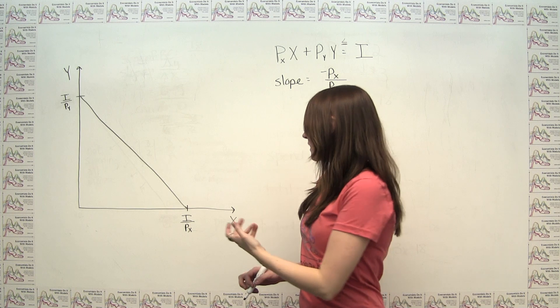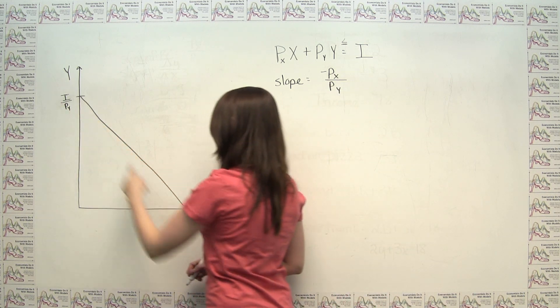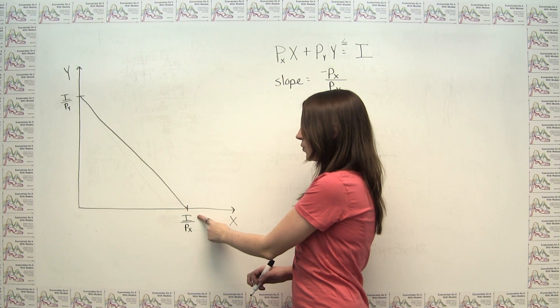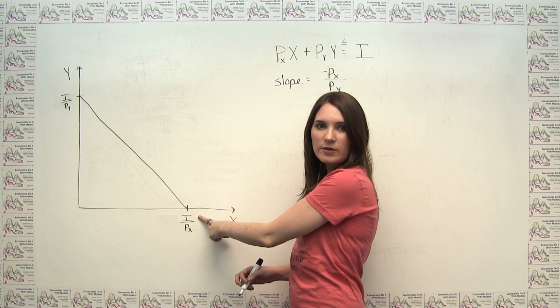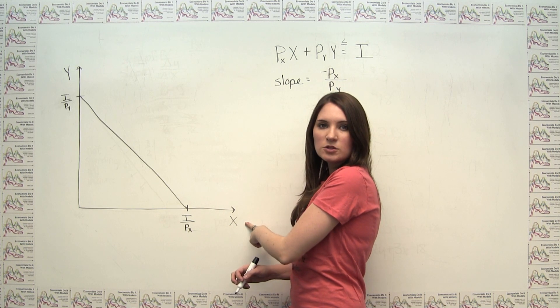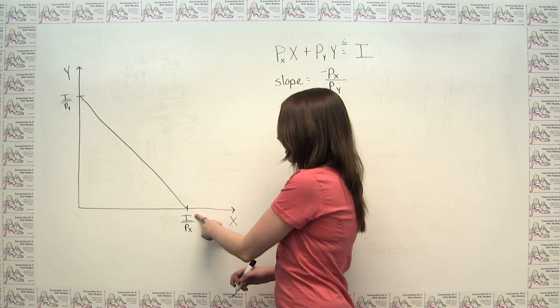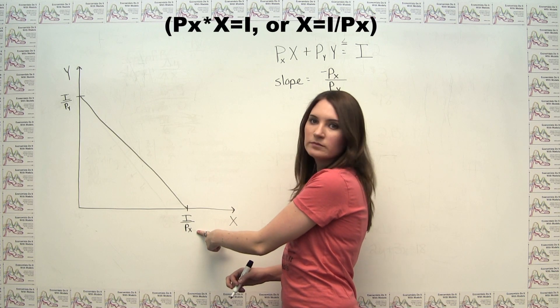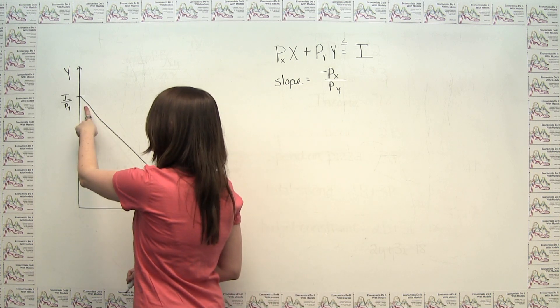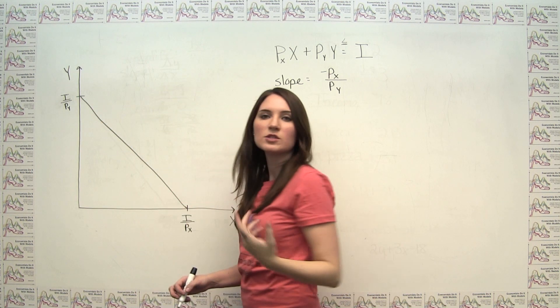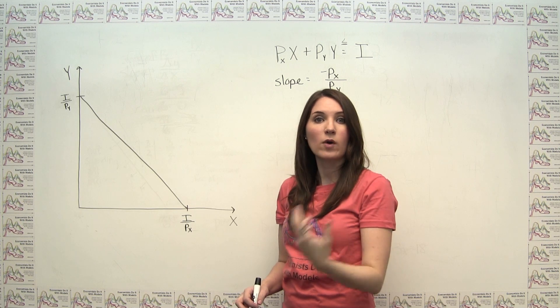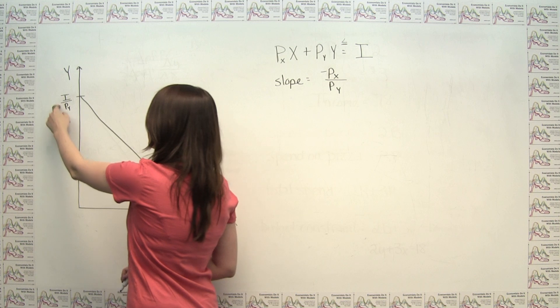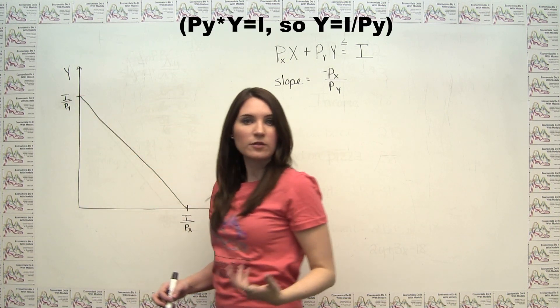We can also say, in general, that if we're going to think about our intercept on our graph, that our intercept down here is the point where the consumer is spending all of her money on good x, so she can buy a maximum of income divided by the price of good x units of that. Similarly, up here, this represents the point where the consumer is spending all of her income on good y. And if she's spending all of her income on good y, she can afford I divided by the price of good y units of that thing.